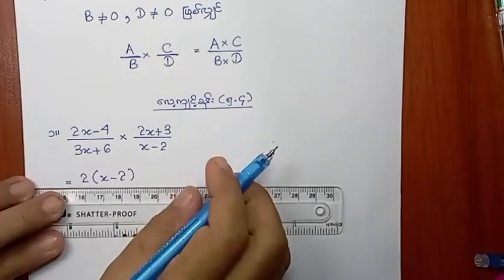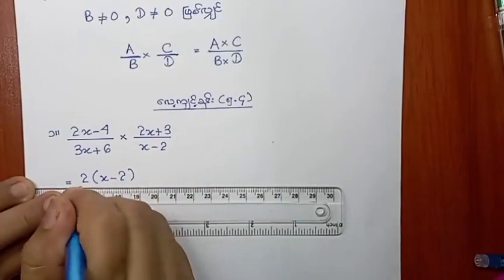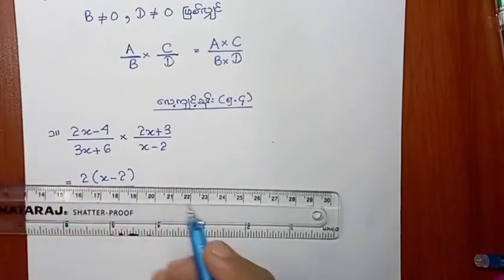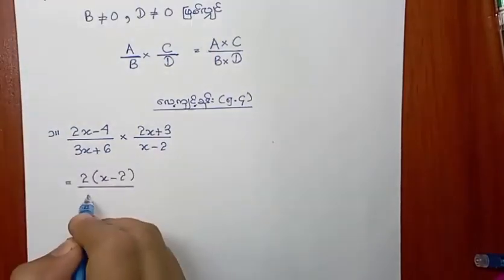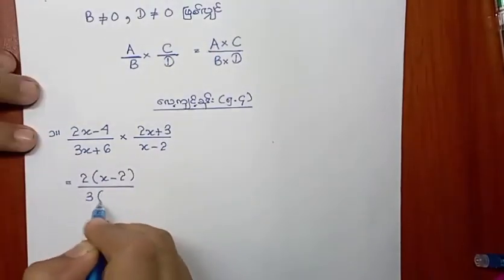We will write 2a plus 6 times 3 times 4.